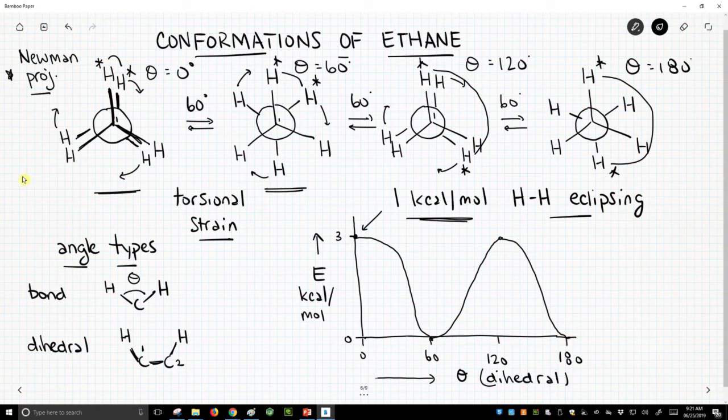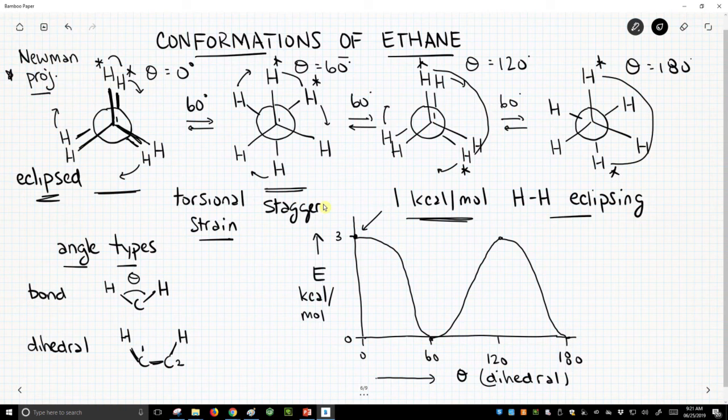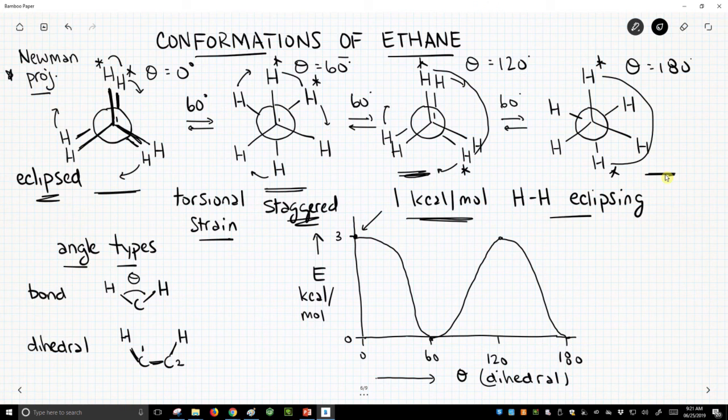This conformation, the leftmost conformation, is called an eclipsed conformation. And when we have dihedral angles of 60 degrees, we call this a staggered conformation. So we will frequently refer to other molecules, and we'll say things are eclipsed or staggered. This structure, this particular Newman projection is also eclipsed, and this last one is also staggered. So this is how we talk about these conformations and use Newman projections to communicate about conformations of molecules.